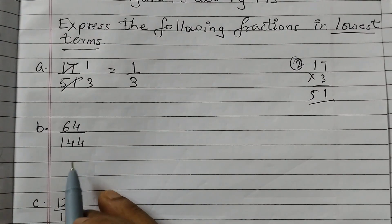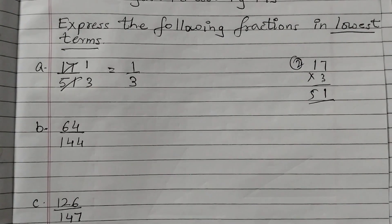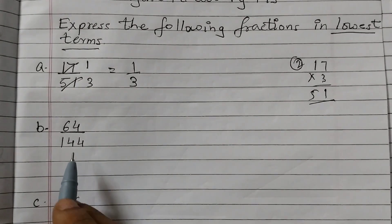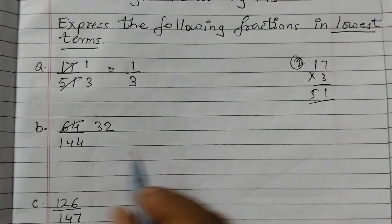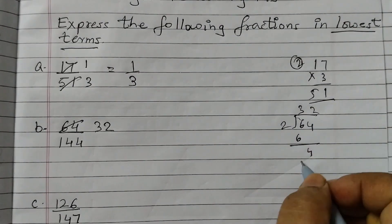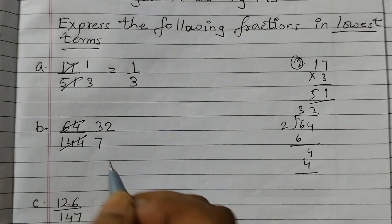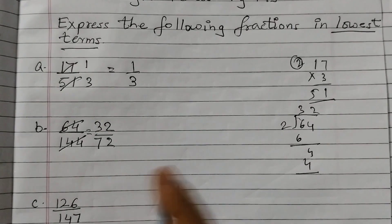Next is 64 upon 144. We don't know the table of 64 or 144, but we can use divisibility rules. Please check the video on divisibility rules if needed. We first cancel by 2: 2 into 64 gives 32, and 2 into 144 gives 72. We get 32 upon 72. We can again cancel by 2: 2 sevens are 14, 2 twos are 4, giving 16 upon 36.